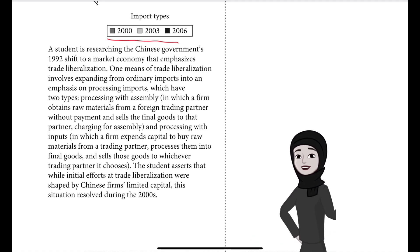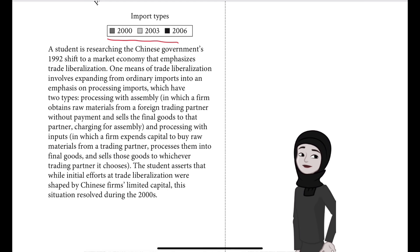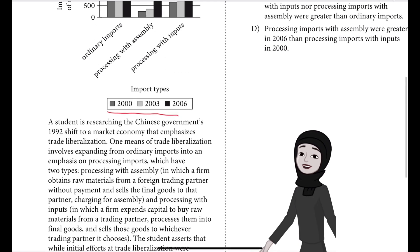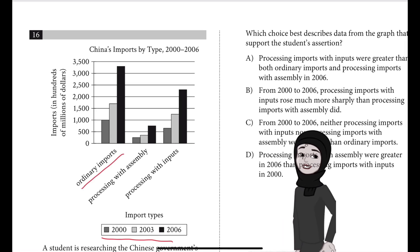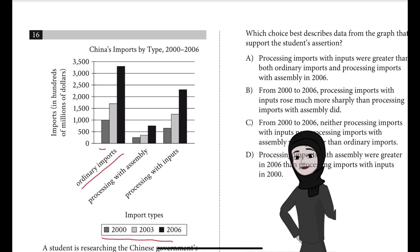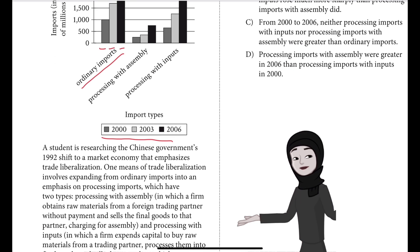In processing with inputs, the firm processes those raw materials into final goods and sells them to whichever trading partner it chooses. The student asserts that while initial efforts at trade liberalization were shaped by Chinese firms' limited capital, this situation resolved during the 2000s. We can observe that initially ordinary imports were quite high in the years 2000, 2003, and 2006.